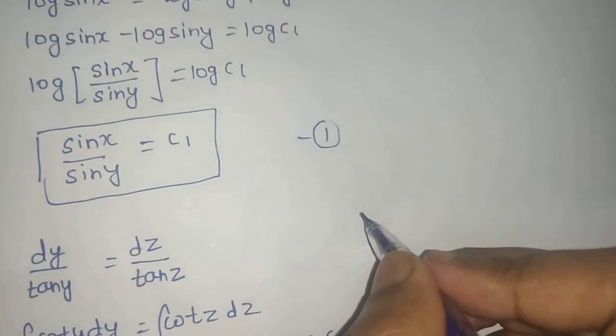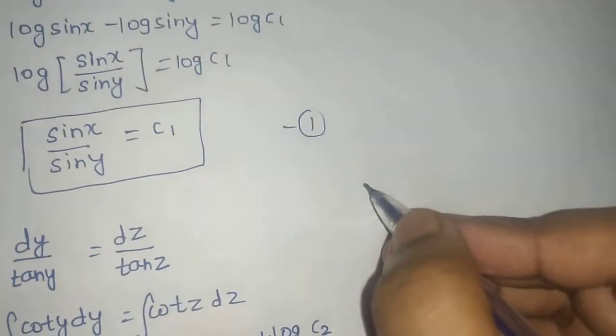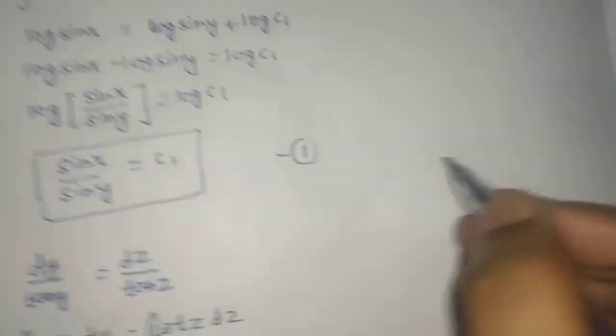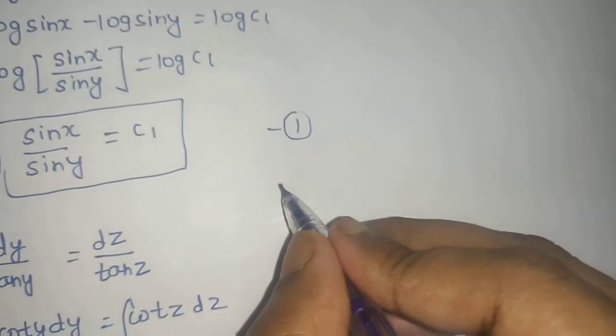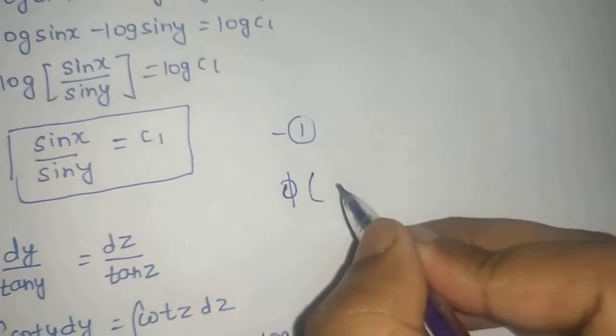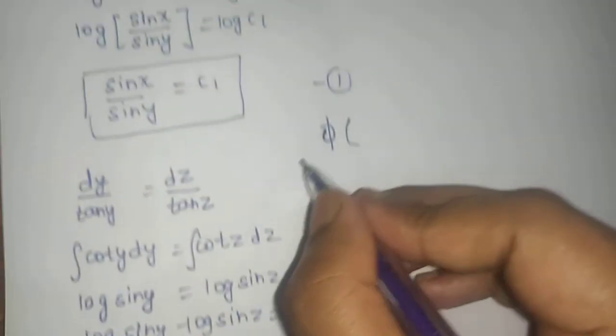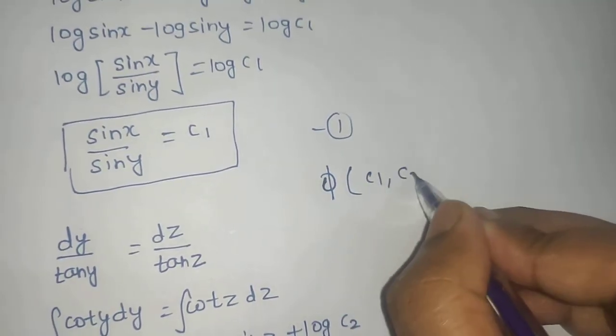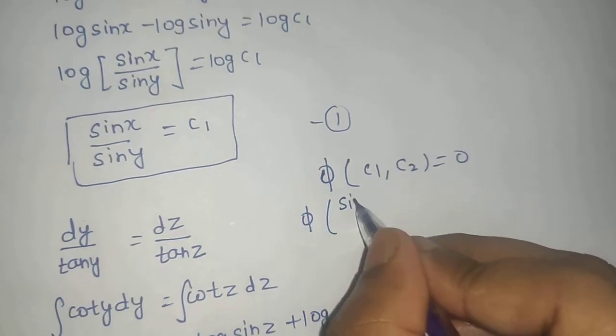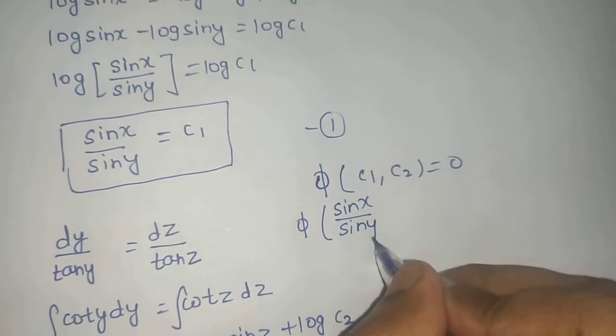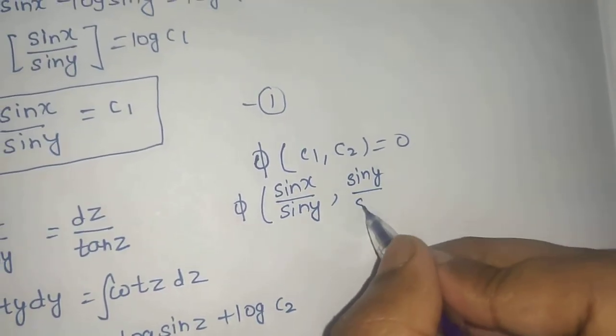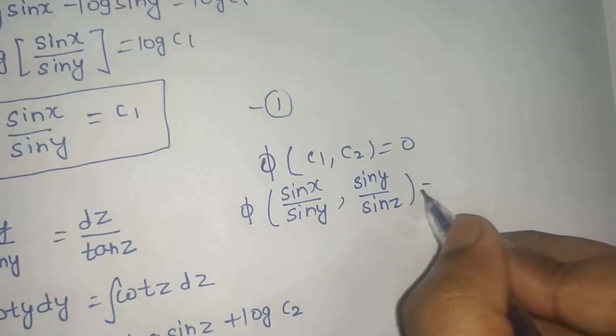The final solution, which is also called the general solution or general integral, is phi of c1 comma c2 equals to 0, where phi is a function. So phi of sin x by sin y comma sin y by sin z equals to 0.